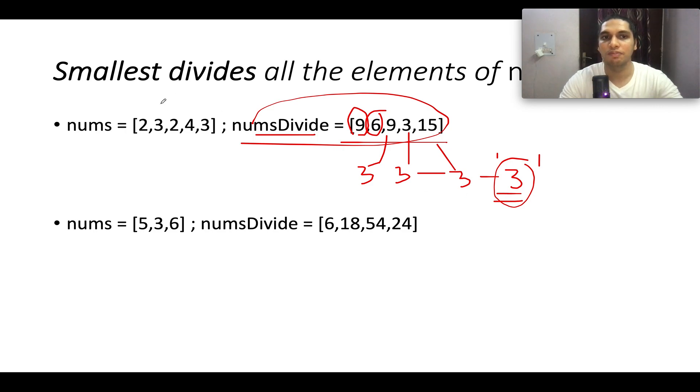So what we should do: we should delete all the elements that are there in my nums array lower than 3. How many elements are there lower than 3? There are two such elements, and therefore two deletions are needed. Because after deleting both the twos, the smallest number that exists in the array would be 3, and this 3 divides all the elements of nums divide array.